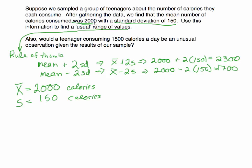So the first thing, use this information to find a usual range of values. So using what's called the rule of thumb, and this is what we're using, the rule of thumb, a usual range of values would be between 1,700 calories all the way up to 2,300 calories. These are the values. Any observation between here would be considered usual. It wouldn't be out of the question, given the information of the mean and the standard deviation.